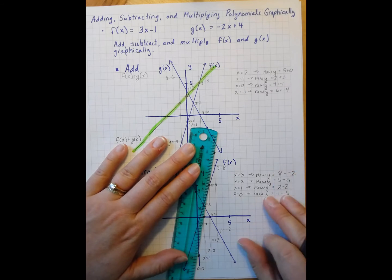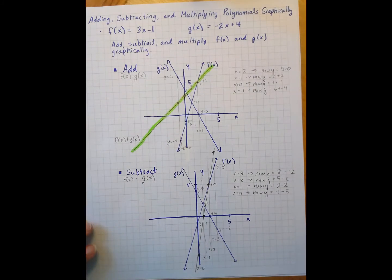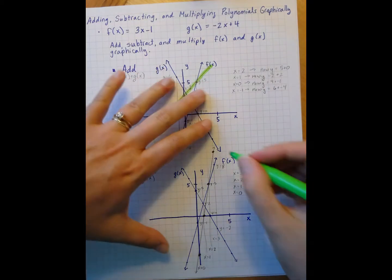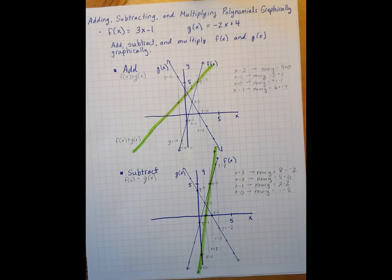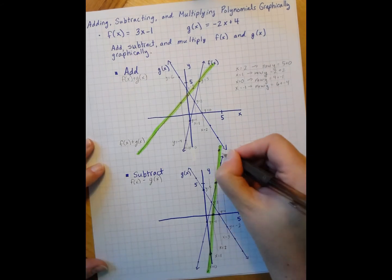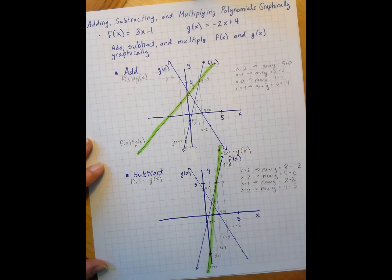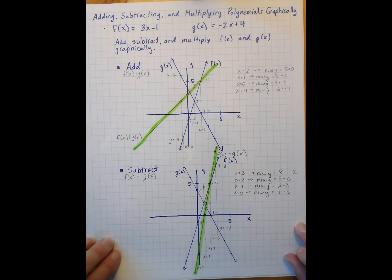You could just do 2, because 2 points make a line. However, I will caution you that the more points you use, the more likely you are to get the right answer, because your additional points will verify that the work you're doing is correct. So this function is f of x minus g of x. And as you do these more, you'll get faster at these.